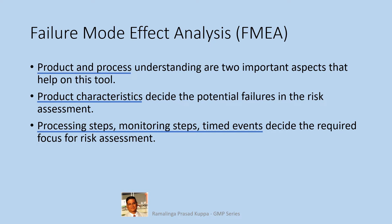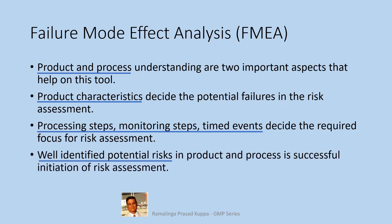Review of processing steps for each minute possibility for any risk should be discussed. The review should include sequence of steps, sequence of addition of reactants, heating and cooling cycles, rate of heating and cooling, and in-process monitoring for critical quality attributes. This process of review should start at the very beginning of the process and should be continued till the product is packaged for marketing. Well-identified potential risks in the product and process is a successful initiation of risk assessment.